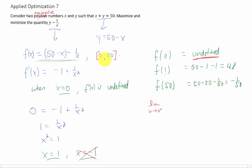So what we really need to do is find a limit as x approaches 0 from the right, because our x values need to be non-negative, of the function 50 minus x minus 1 over x. You'll notice that as x goes to 0, we get 50 minus 0 minus infinity. So this limit is actually negative infinity.